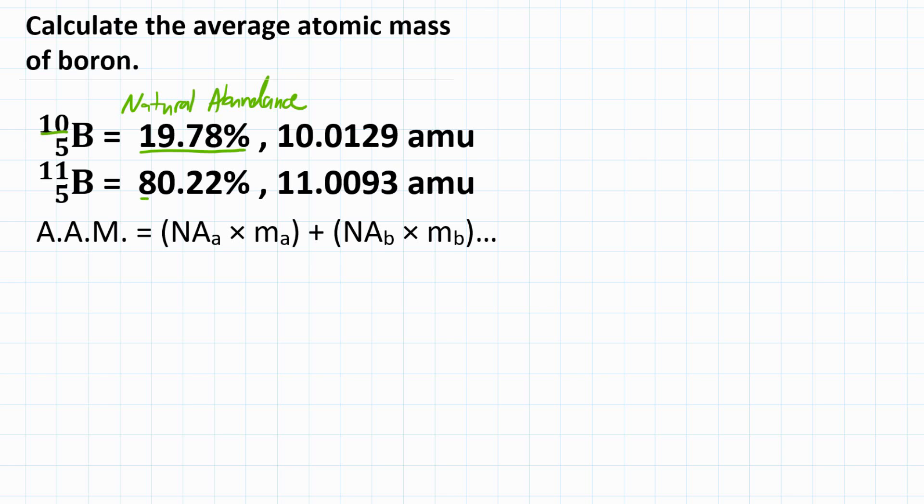And the other 80.22% of atoms of boron are going to be boron-11. So on Earth, boron has these specific percentages for each isotope of boron. We're going to need the natural abundance, and we're also going to need the mass of each isotope.